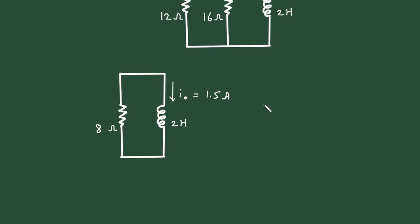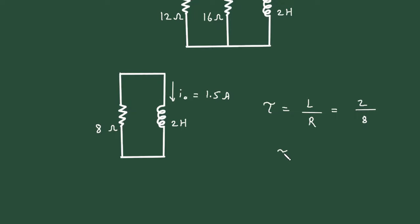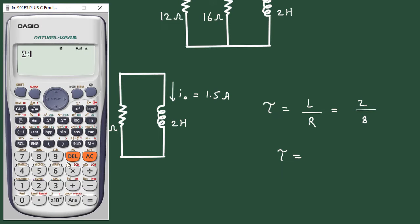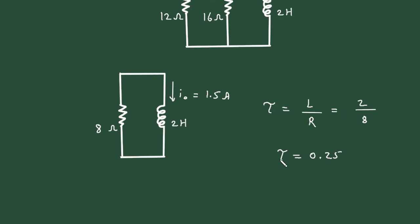Now let's find the time constant tau. For this LR circuit, the time constant is tau equals L divided by R. The value of L is 2 henries and the value of R is 8 ohm. So tau equals 2 divided by 8, which is 0.25 seconds.